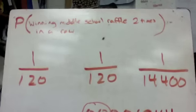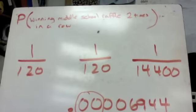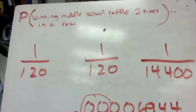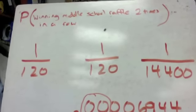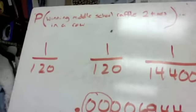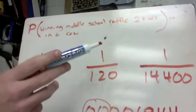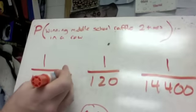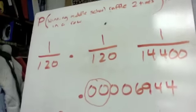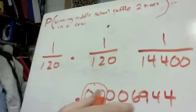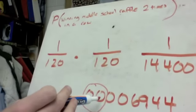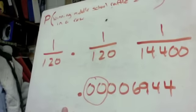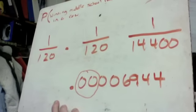Let's say we had a middle school raffle where they drew a name from a hat and then put all names back in the next day. There are 120 kids in the middle school, so each day your chance is one in 120. Multiplying those together gives one out of 14,400. One divided by 14,400 gives a decimal where the first several digits are zeros — basically a zero percent chance, actually less than one tenth of one percent.